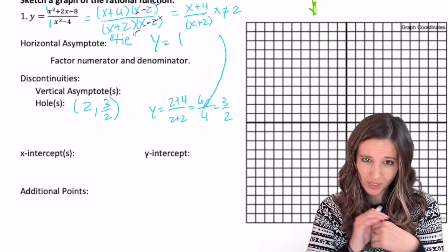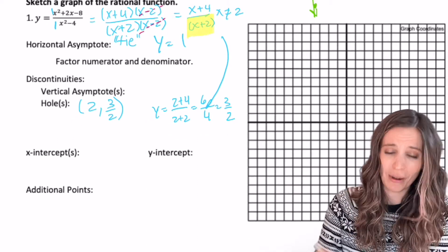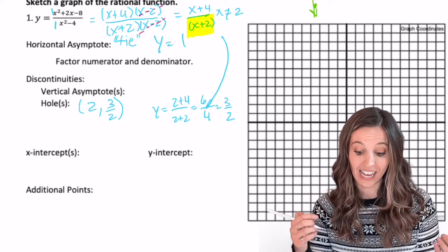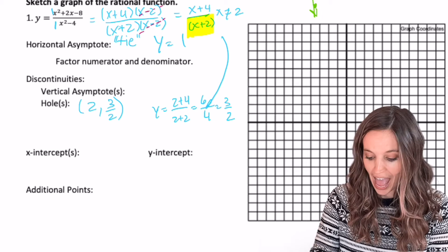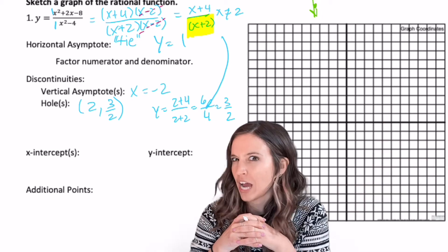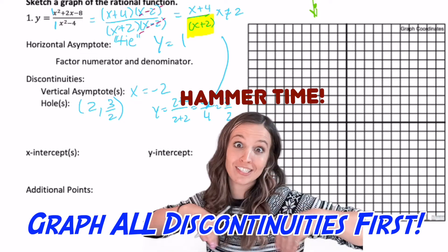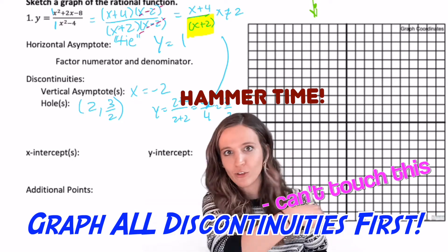Do I have a vertical asymptote? Well, yeah. I have a denominator in my simplified version, x plus two, which means I can't plug in x equals negative two. Vertical asymptote, x equals negative two. What time is it? It's hammer time. We got to get all the things we can't touch on that graph. All those discontinuities.